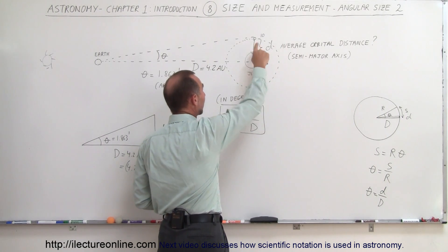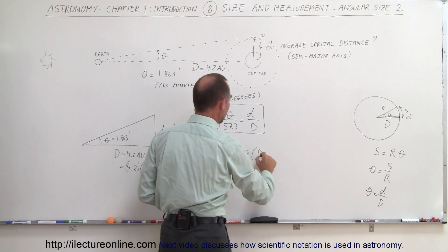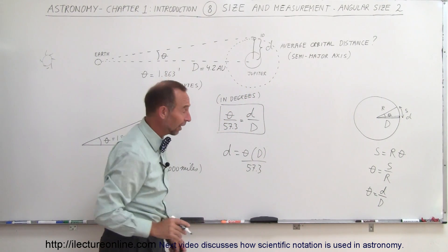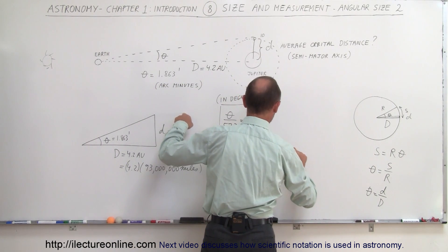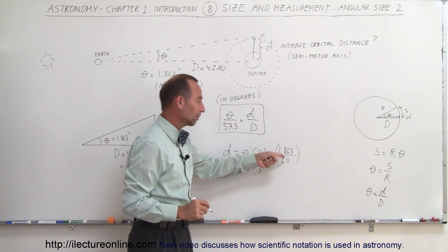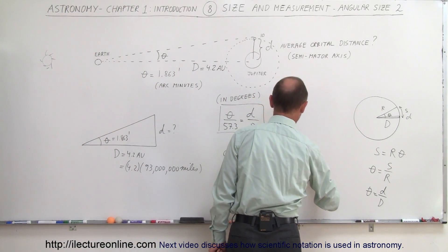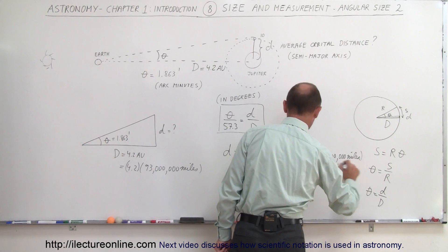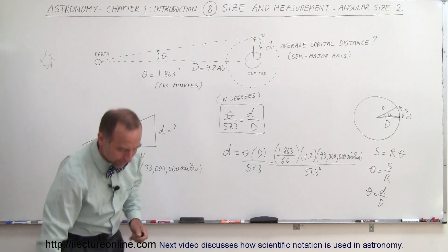And if we then want to find out what little d is, we can say little d here is equal to the angle theta times big D divided by 57.3. And now let's go ahead and figure this out for our example here. So we had an angle of 1.863 arc minutes, and we have to divide that by 60 to get degrees. So now we convert it from arc minutes to degrees, 60 minutes in a degree. The distance, that would be 4.2 times 93 million miles. And the whole thing divided by 57.3 degrees in radian.